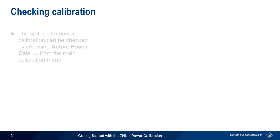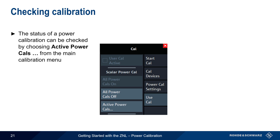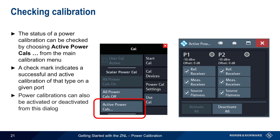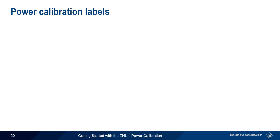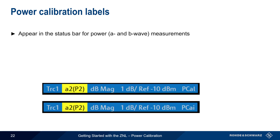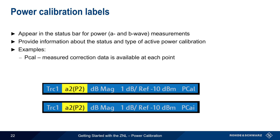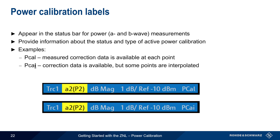Once power calibration is complete, the status of that calibration can be checked by going to the calibration menu and selecting Active Power Cals. A check mark indicates a successful and active calibration of that type on a given port. If needed, an active power calibration can also be deactivated using this dialog. Power calibration labels appear in the status bar for any power or wave measurements, providing information about the type and status of any current and active power calibrations. For example, the label PCAL will appear whenever measured correction data is present at each sweep point. If interpolation of the data is being performed, then PCAI will appear as a label. Please see the ZNL documentation for a complete list of label types and meanings.